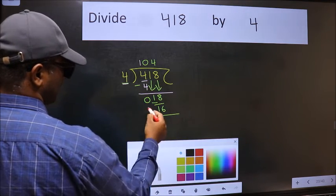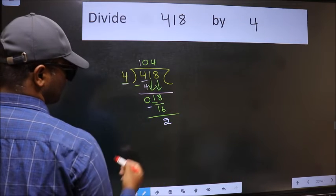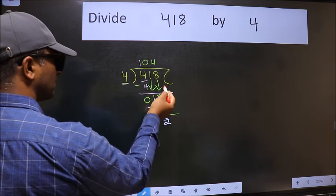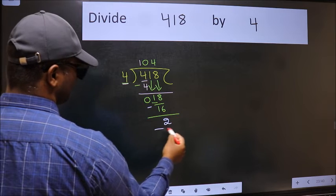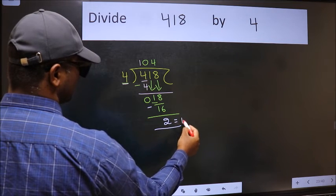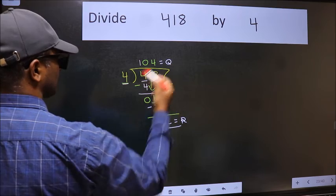Now we subtract and get 2. No more numbers to bring down, so we stop here. This is our remainder, and this is our quotient.